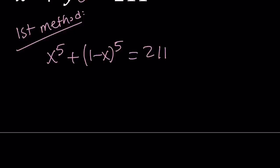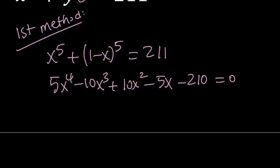But to keep a long story short, if you expand it, add it all up, simplify it, you're going to get the following: 5x to the 4th minus 10x cubed plus 10x squared minus 5x minus 210 equals 0. So that's going to be a quartic equation and you can solve it.